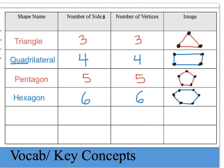The next shape is called a heptagon. The word hepta means seven, which means we have seven sides and seven vertices. After drawing all seven sides, the vertices are labeled — notice there are seven vertices on the heptagon.